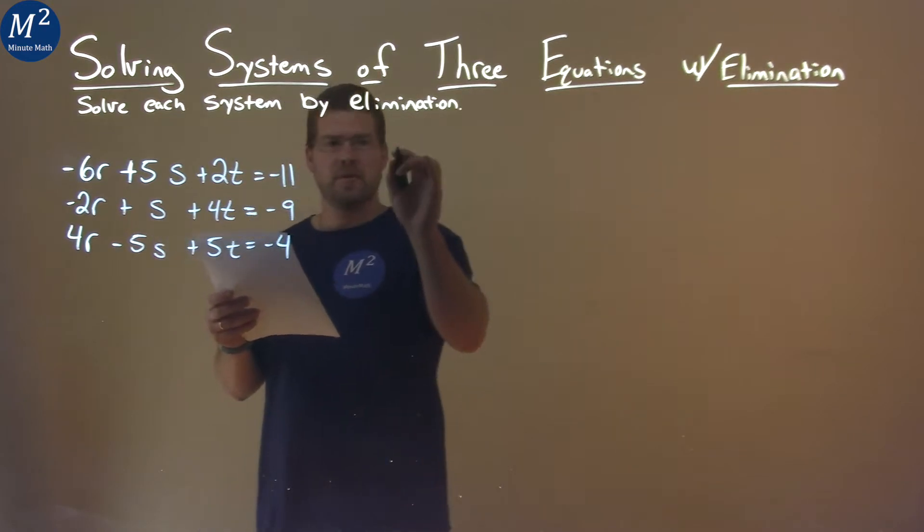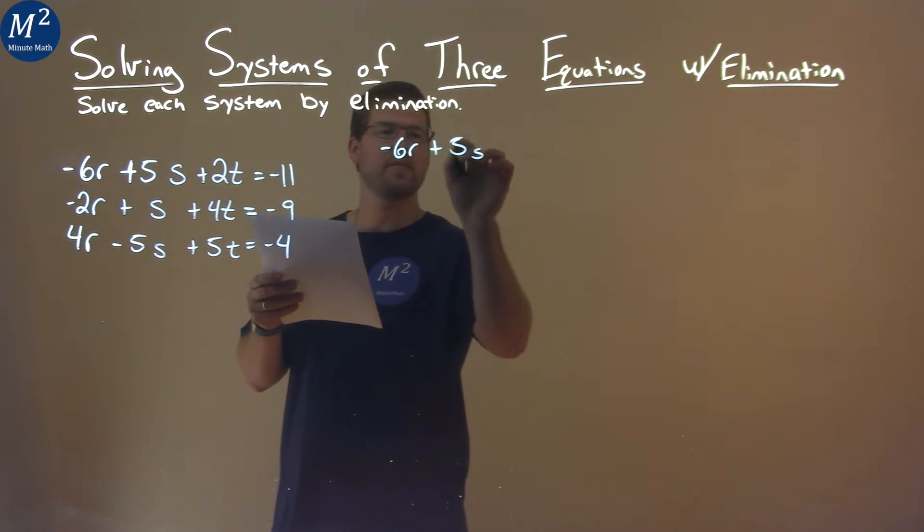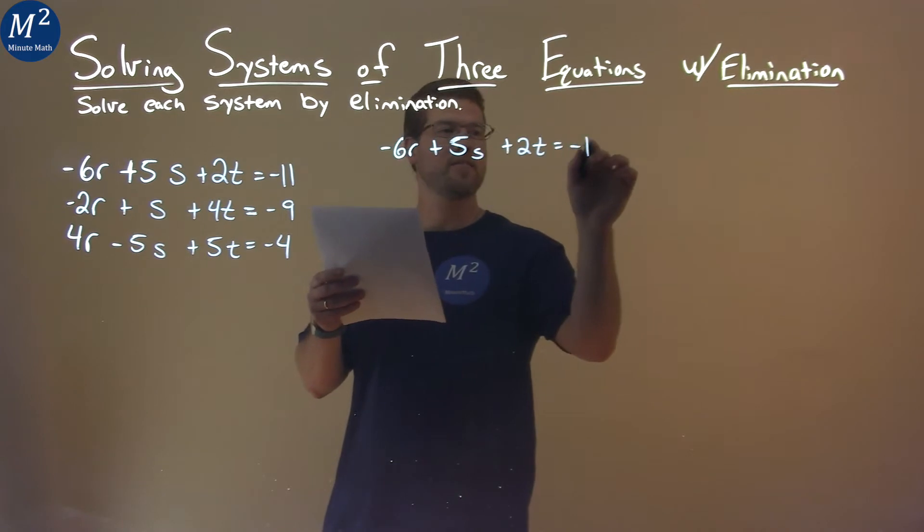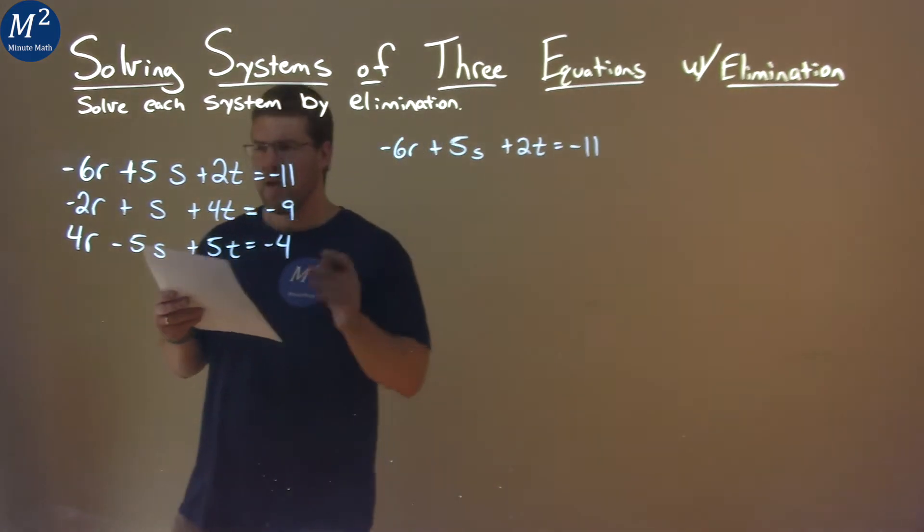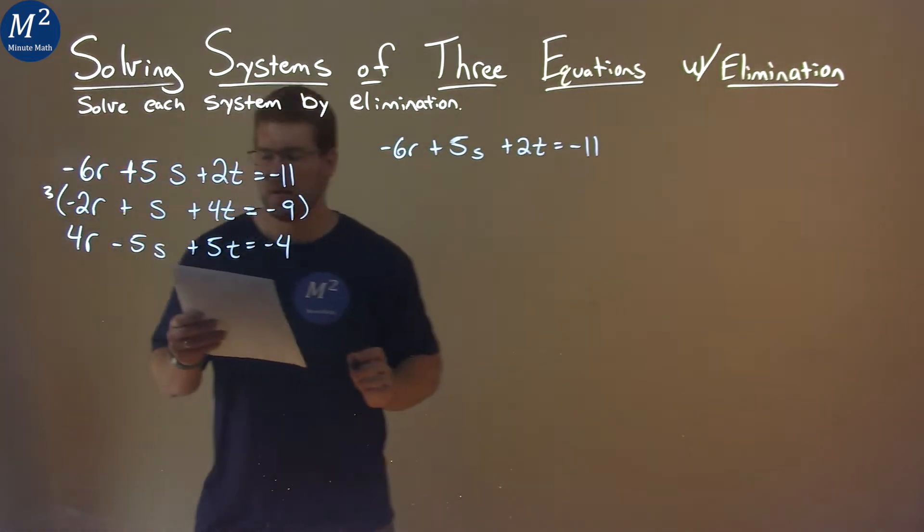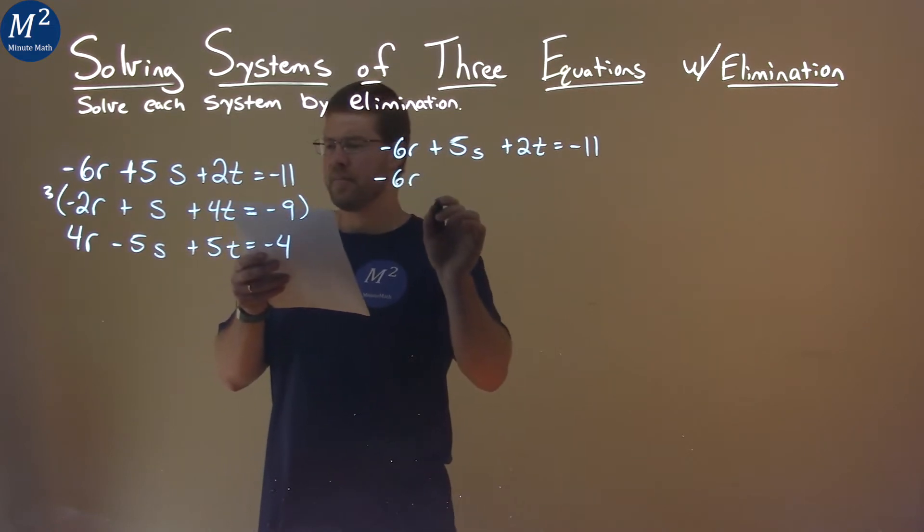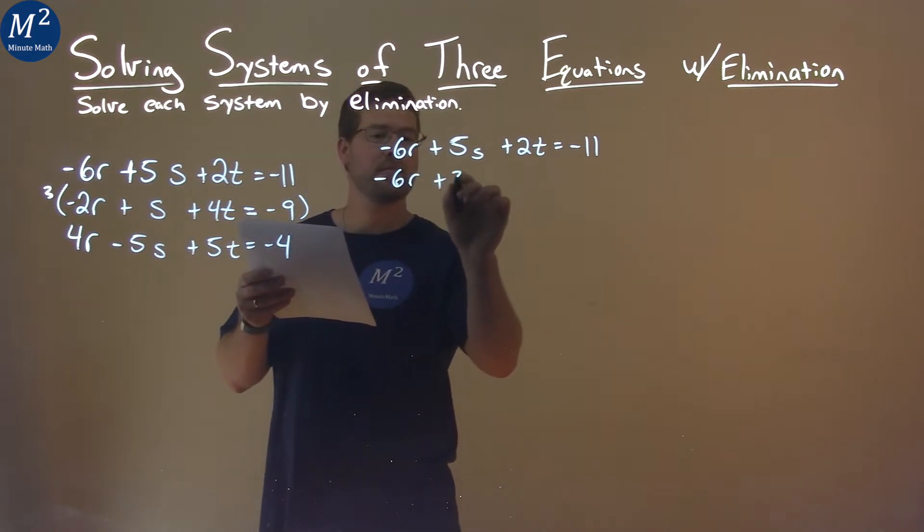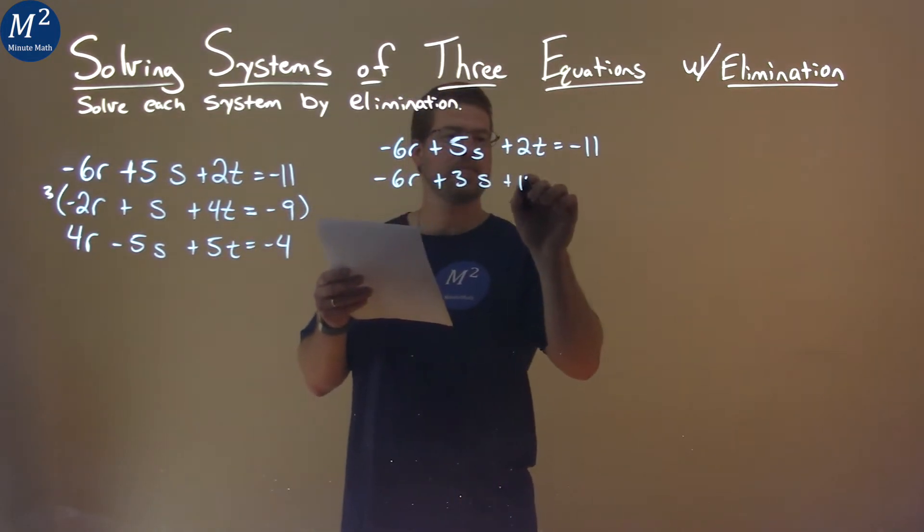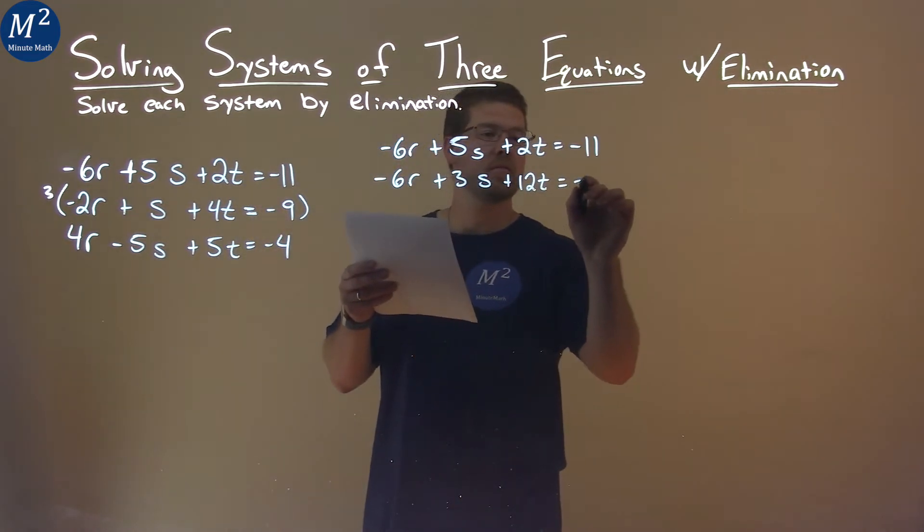Let's rewrite our first equation here: negative 6r plus 5s plus 2t equals negative 11. If we take the second equation and multiply the whole thing by 3, what do we get? Well, 3 times negative 2r is negative 6r, 3 times s is 3s, 3 times 4t is 12t, and 3 times negative 9 is negative 27.